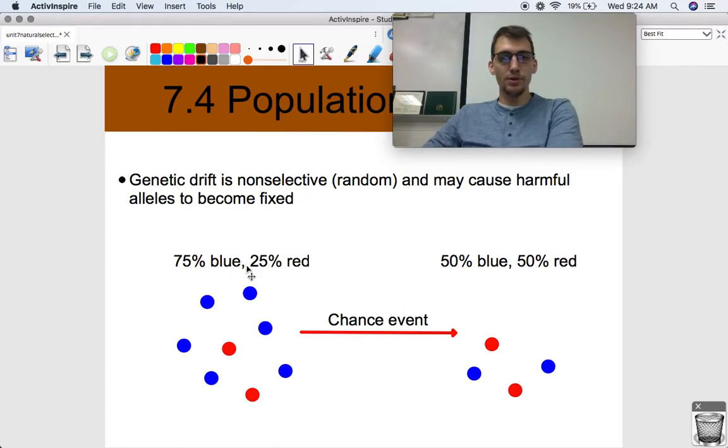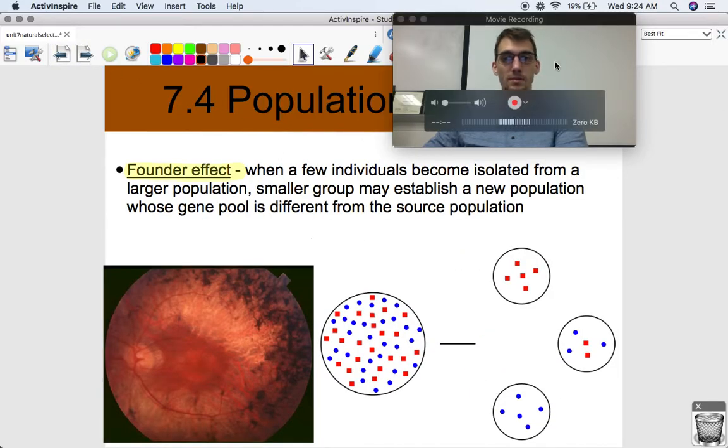Here's genetic drift once again. If we've got 75% blue population, 25% red, these are phenotypes over here, but you get the idea. Our allele frequencies are going to change due to a chance event. That's what genetic drift is all about.